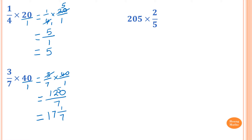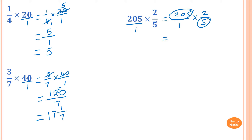205 times 2 over 5. So 205 is the same as 205 over 1. So I just rewrite this as 205 over 1 times 2 over 5. Now 205 and 5 — I can divide both by 5, because 5 is the highest common factor. So divide by 5 on the top, and divide by 5 on the bottom. 5 goes into 205: 5 goes into 20 is 4 times, and 5 goes into 5 is 1, giving 41. And 5 divided by 5 is 1.